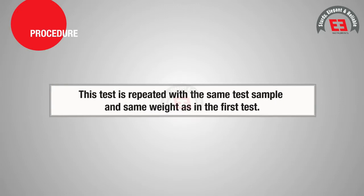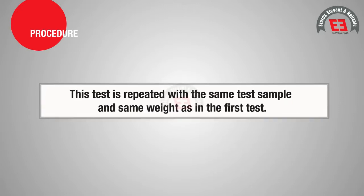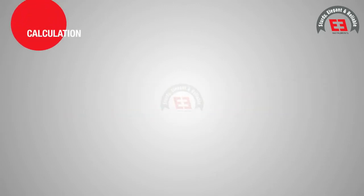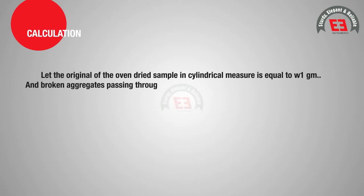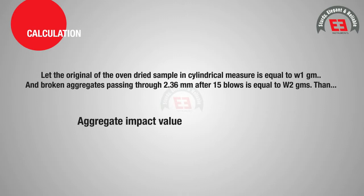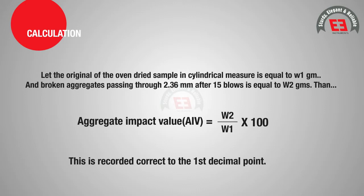This test is repeated with the same test sample and same weight as in the first test. Let the original weight of the oven-dried sample in the cylindrical measure equal W1 grams, and the broken aggregates passing through 2.36 mm after 15 blows equal W2 grams. Then, Aggregate Impact Value (AIV) = (W2 / W1) × 100. This is recorded correct to the first decimal point.